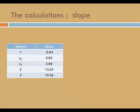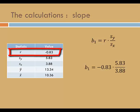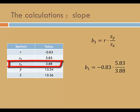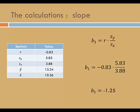Let's start by calculating the slope. The formula for slope, B1, is r times the quotient of Sy and Sx. I'll plug in the values from the table. The correlation coefficient is negative 0.83. The standard deviation among the response values is 5.83, and the standard deviation among the explanatory values is 3.88. Once I simplify, I see that the slope is negative 1.25.